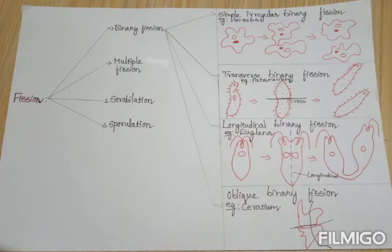In my previous video, you learned about asexual reproduction and their types. Today we are going to learn about fission. First, you should know the definition for fission. It is the division of the parent body into two or more identical daughter individuals.